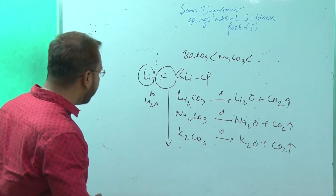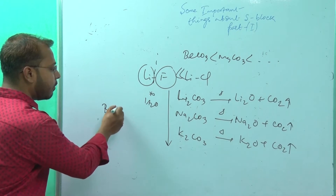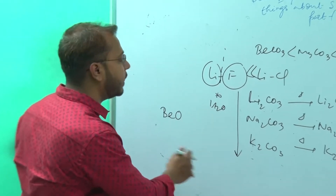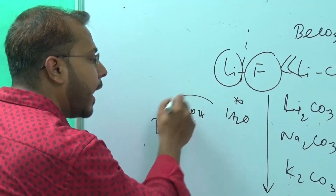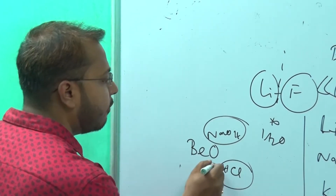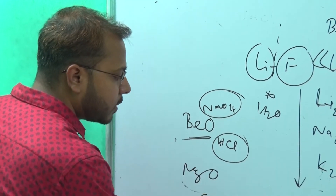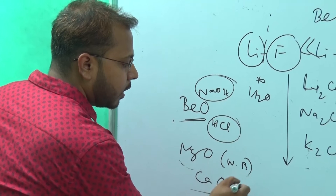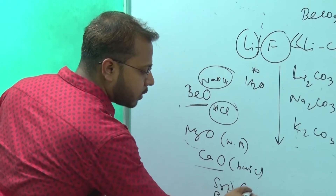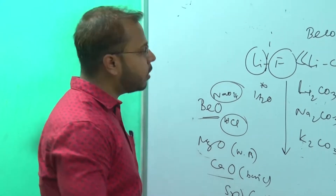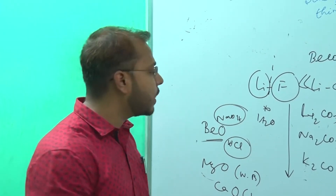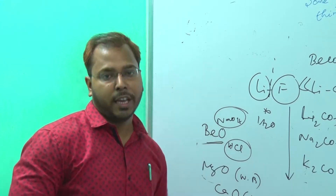BeO, beryllium oxide, is amphoteric in nature because it can react with both NaOH and HCl to form salt and water. MgO is weakly basic, CaO is basic, and SrO and BaO are strongly basic. As we move down the group, metallic property increases, and therefore basic property also increases.